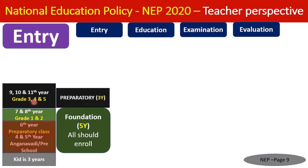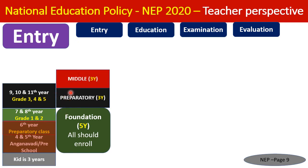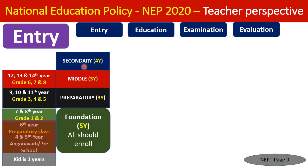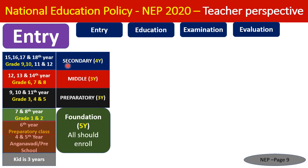After the five-year foundation course, the next level is the Preparatory Level for three years covering Grades 3, 4, and 5 (ages 9, 10, 11). Then comes Middle School: Grades 6, 7, and 8 (ages 12, 13, 14). Secondary level covers four years — Grades 9, 10, 11, and 12 — with the present PUC (junior college) merged into the school system.